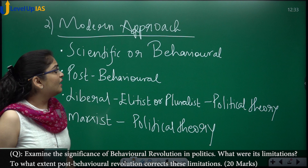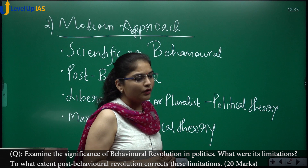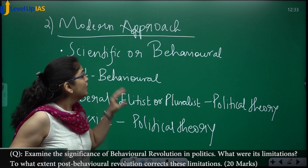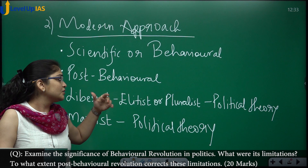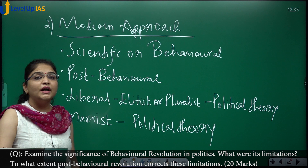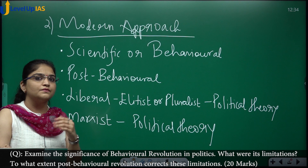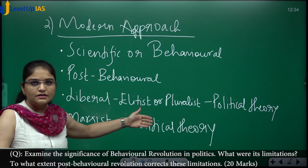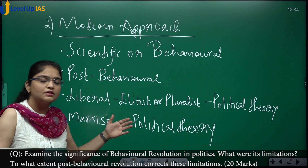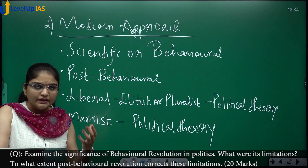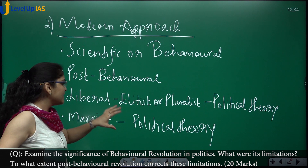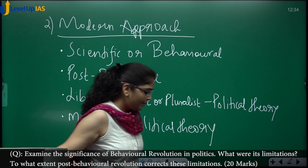Coming to modern approaches, the most important is bringing in the scientific character. David Easton's contribution is the most significant modern approach, and post-behavioralism is also a very important modern approach. Two important divisions in modern approaches are the liberal and the Marxist schools of thought. In the liberal school we study elitist and pluralist debates, and Marxists have contested the structure on which politics and the entire discipline are designed.